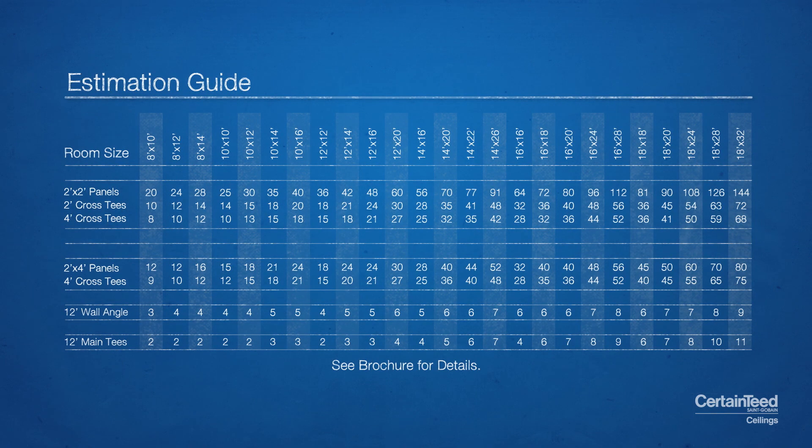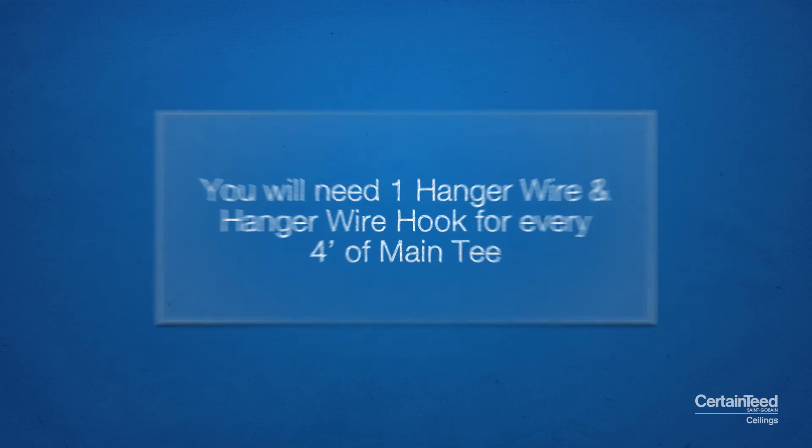For the ceiling panels, the number of panels and square footage per carton vary between products. So be sure to check the packaging to ensure that you will have enough product to complete the job. You will also need one hanger wire and hanger wire hook for every 4 feet of main tee.